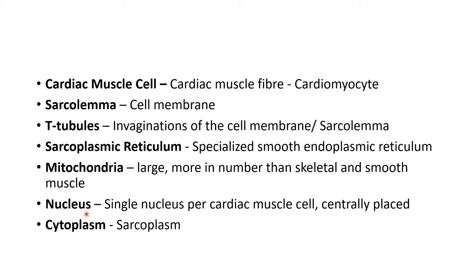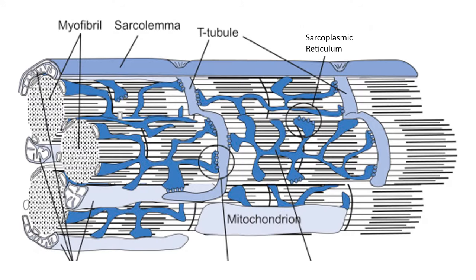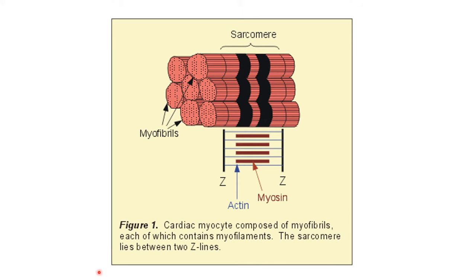The cardiac muscle cell has a single nucleus, which is centrally placed within the cell. The cytoplasm of the cardiac muscle cell is also known as the sarcoplasm. Looking closely, you can see structures known as myofibrils — one myofibril here, another here, and so on. Many myofibrils are arranged parallel to each other within the cell.